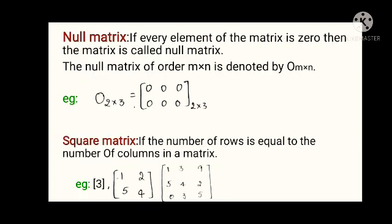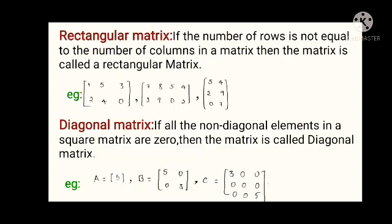Null matrix: if every element of a matrix is zero, then the matrix is called a null matrix. Square matrix: if the number of rows is equal to the number of columns, then the matrix is said to be a square matrix. Similarly, if the number of rows is not equal to the number of columns, then it is said to be a rectangular matrix. Examples are given below.